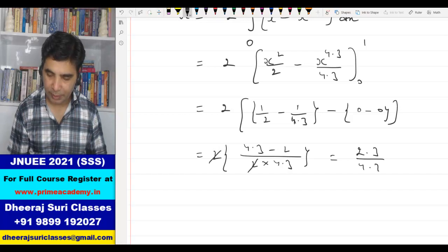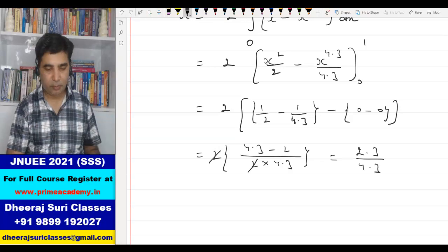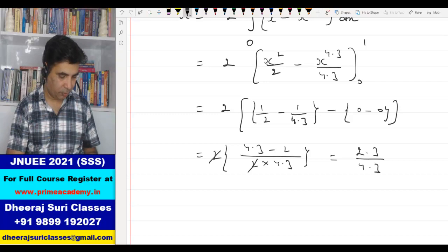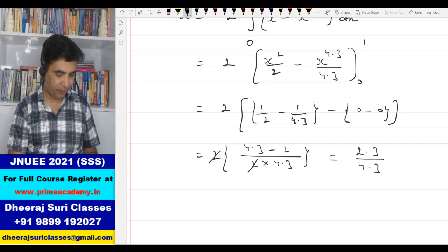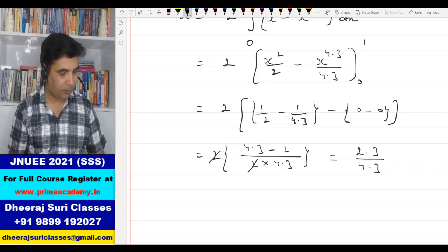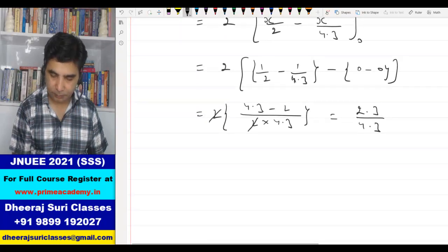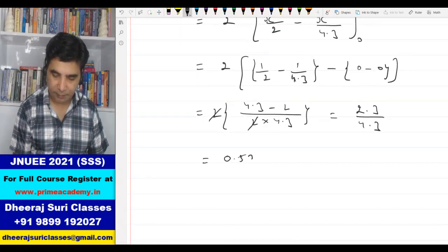divided by 4.3. And if I use the calculator to find out what is 2.3 divided by 4.3, it is 0.53488.